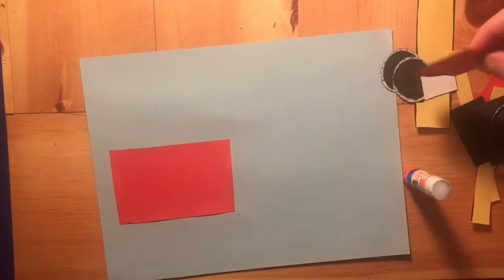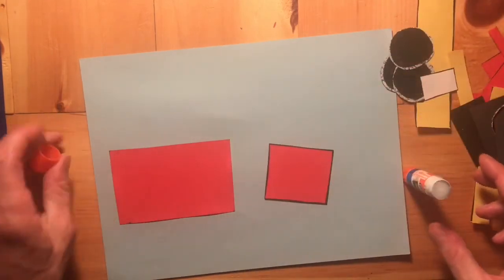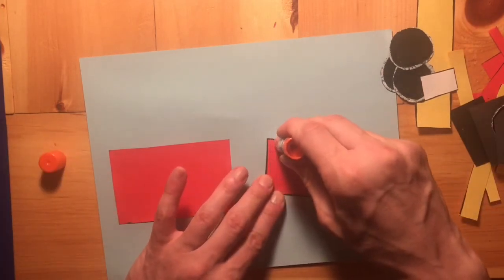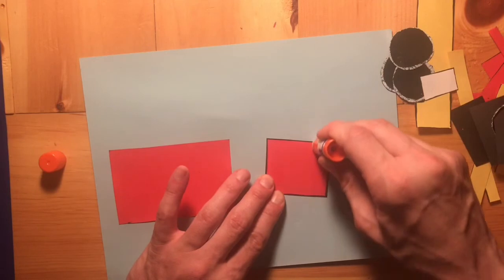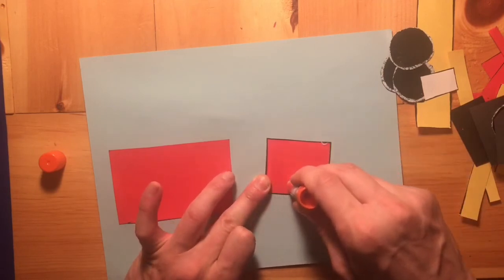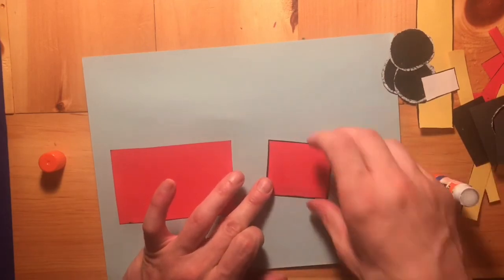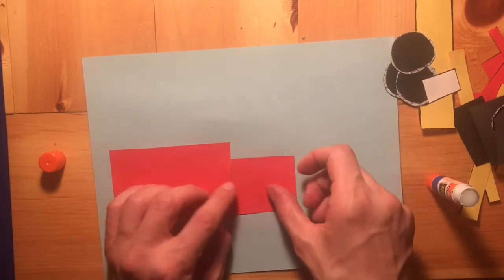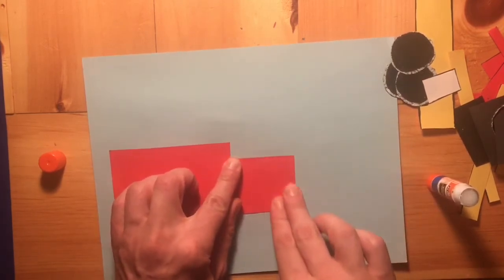So now we're gonna take our glue, we're gonna go around the outside of the small piece of the fire truck. This is going to be the front piece of the fire truck. And I want you to make the front piece touch the back of the fire truck. See how there's no gap in between there and it also doesn't overlap?